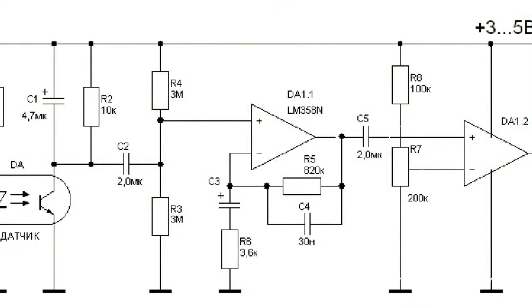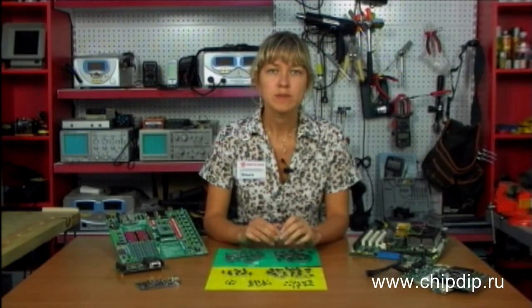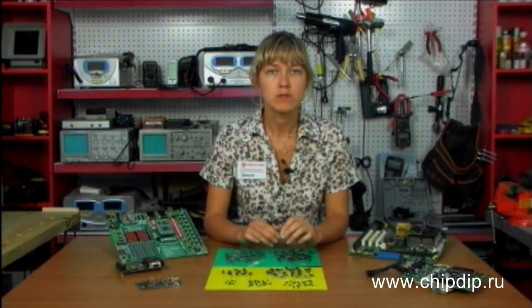The operational amplifier was originally designed to perform mathematical operations, hence its name, by using voltage as an analog quantity. This approach forms the basis of analog computers in which operational amplifiers were used for the basic mathematical operations: addition, subtraction, integration, differentiation, etc. However, an ideal operational amplifier is a multifunctional circuit solution with many uses apart from mathematical operations.